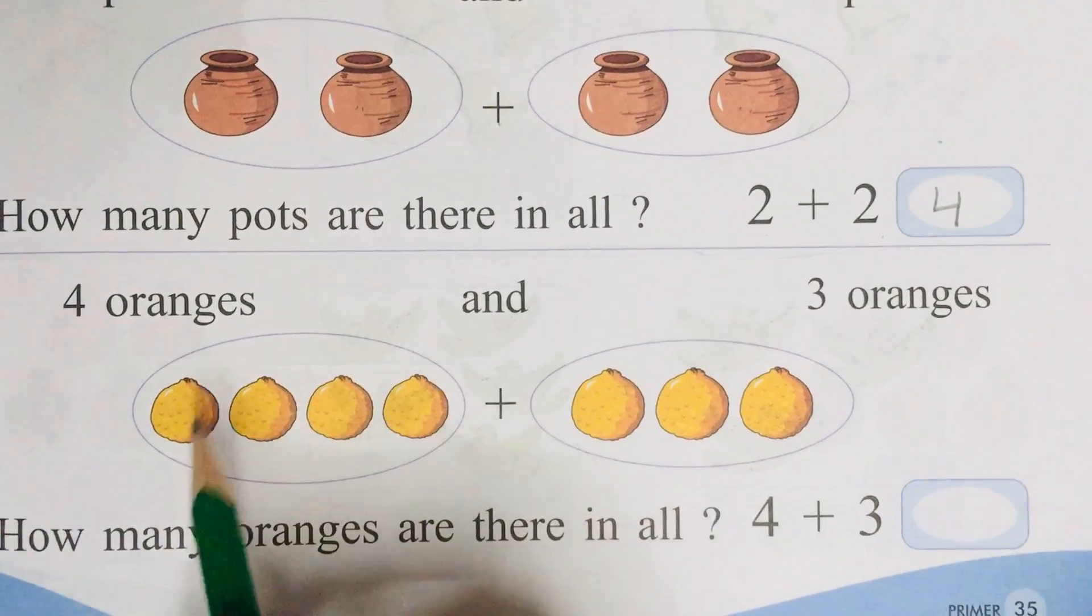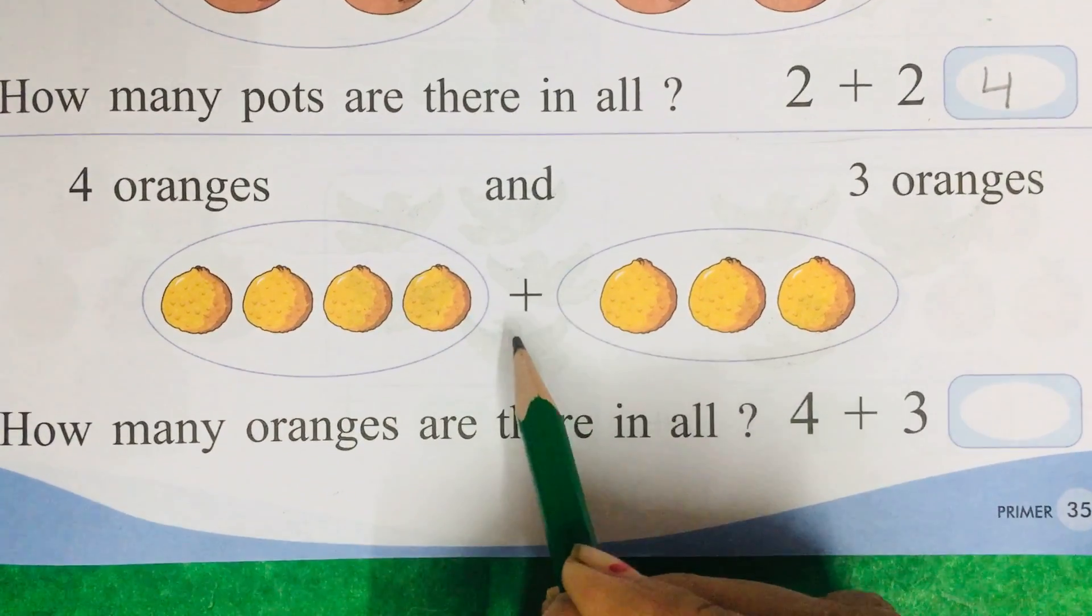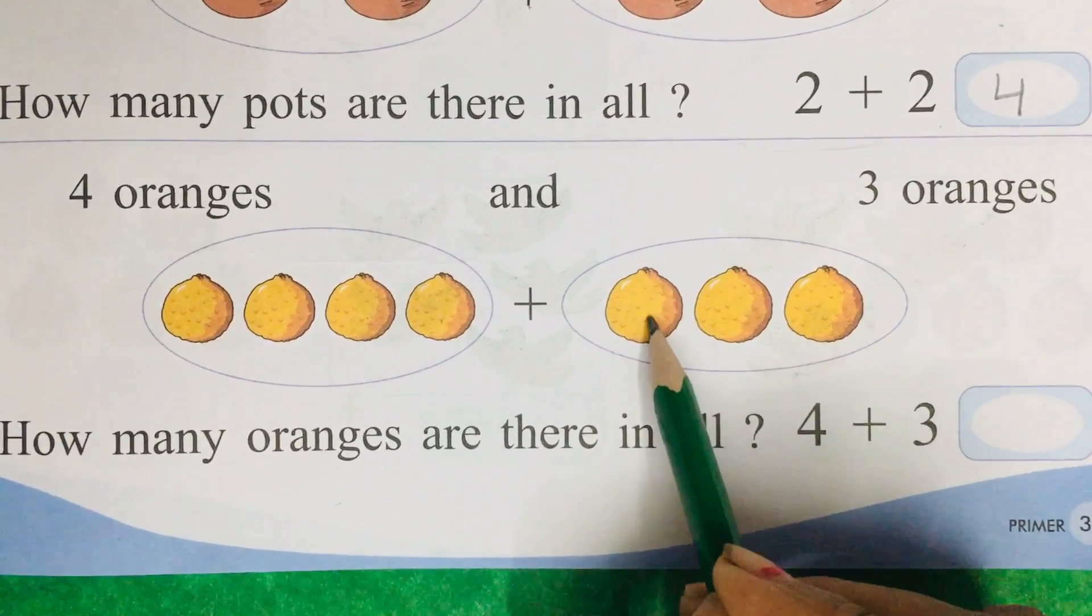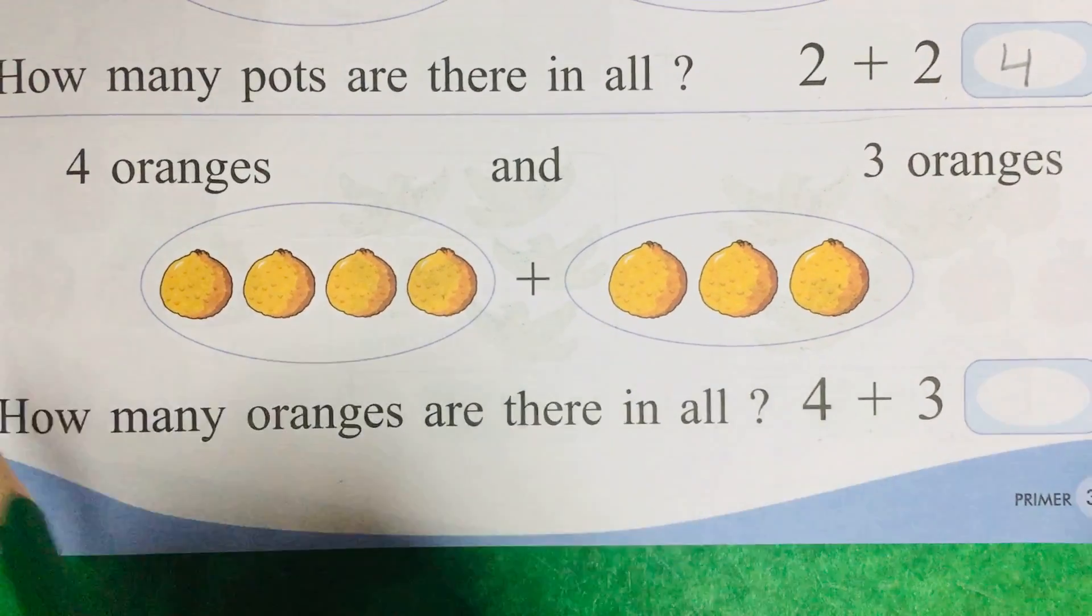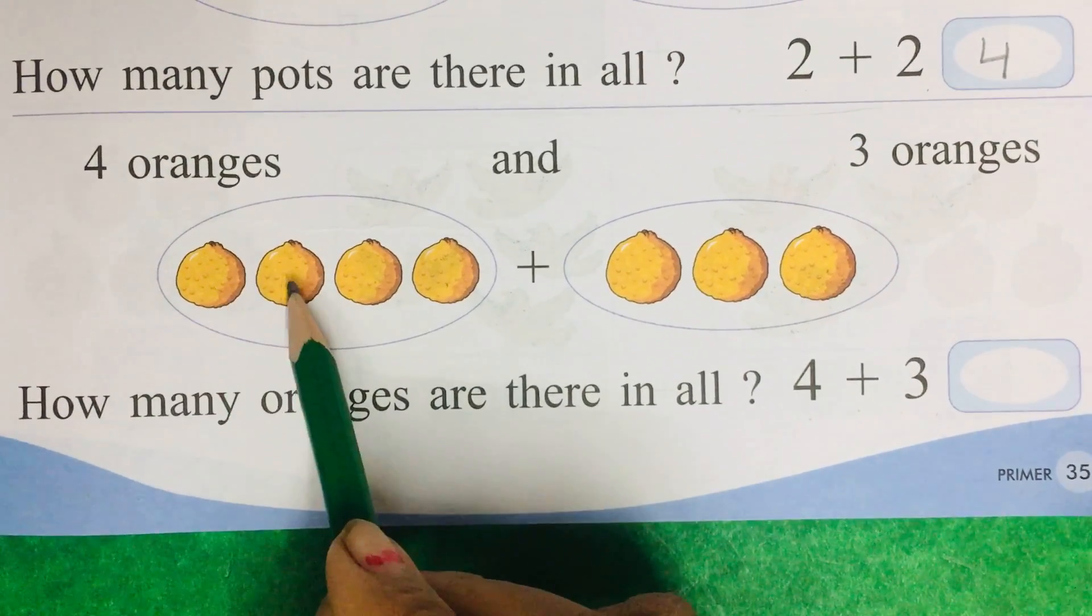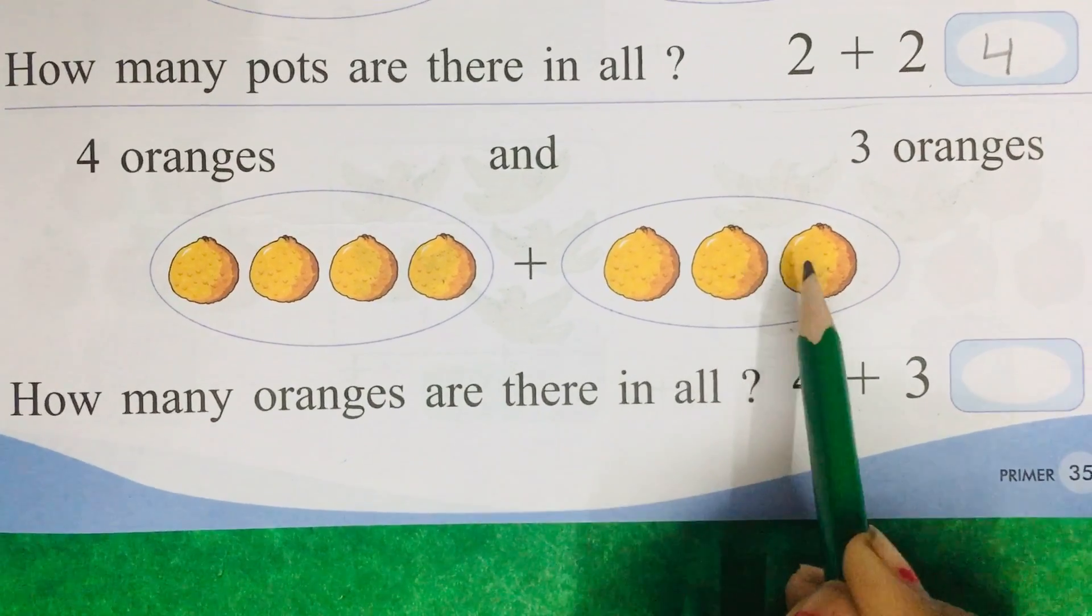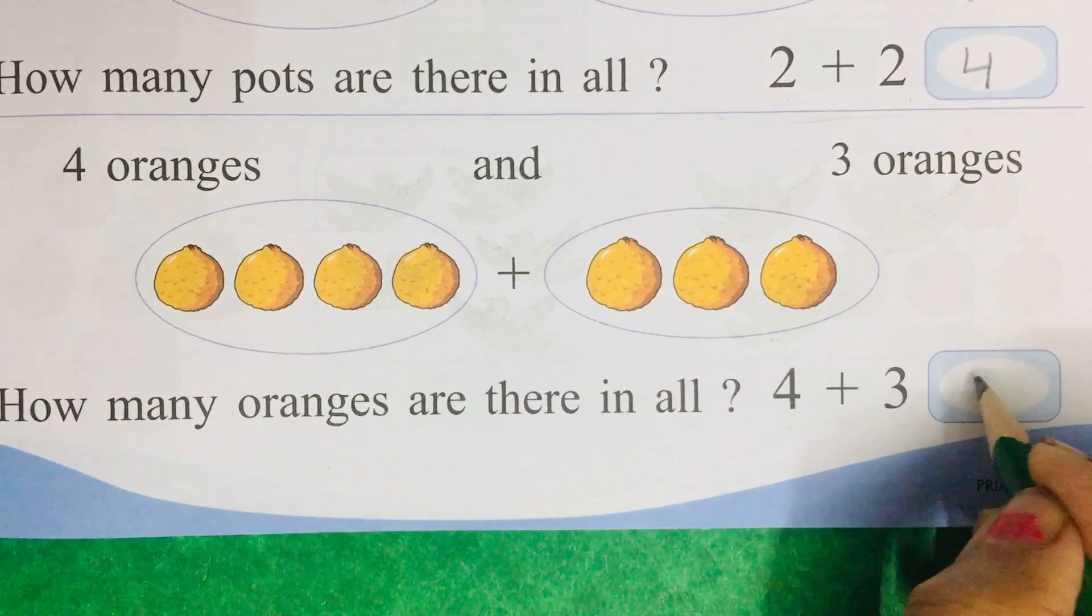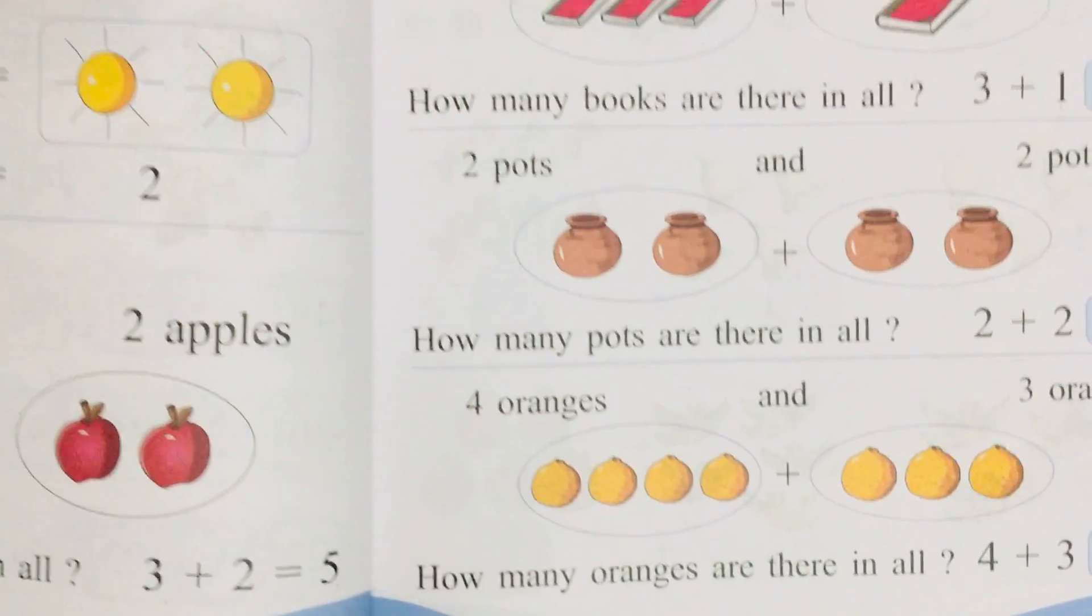Count these oranges, 1, 2, 3, 4 plus 1, 2, 3. So 4 plus 3 is written. Now what will be the answer? Count all the oranges, 1, 2, 3, 4, 5, 6, 7. So what will we write over here? 7. You have to do this work in your book.